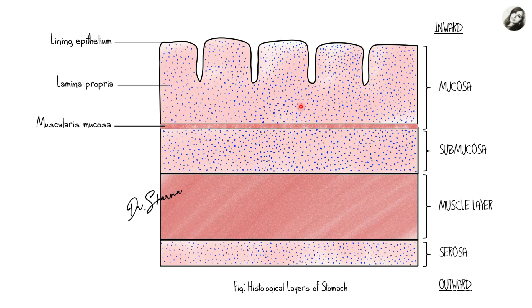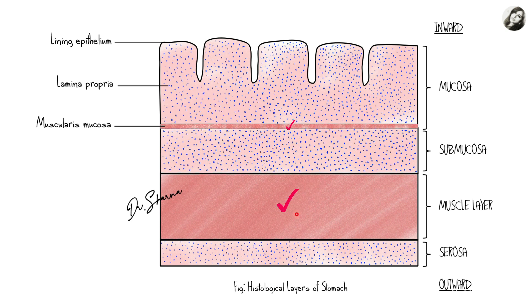The lining epithelium on top is the epithelial tissue layer. The lamina propria of the mucosa, the submucosa, and the serosa are the connective tissue layers — you can see the blue dots here representing connective tissue cell nuclei. So this is the epithelial tissue and these three are the connective tissue layers. We can also see that there are two muscle layers: the muscularis mucosa and the main muscle layer.